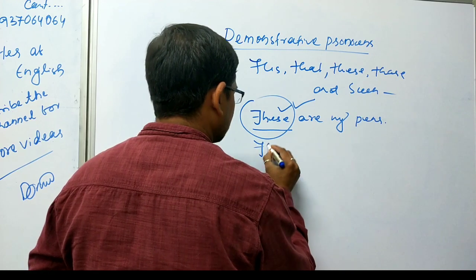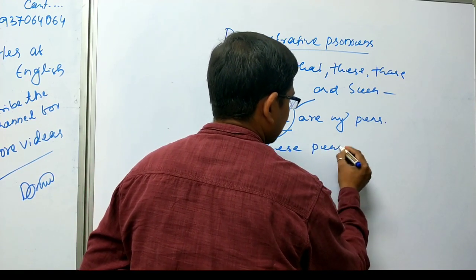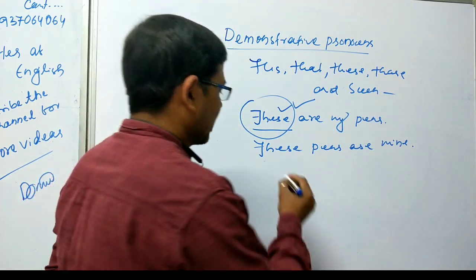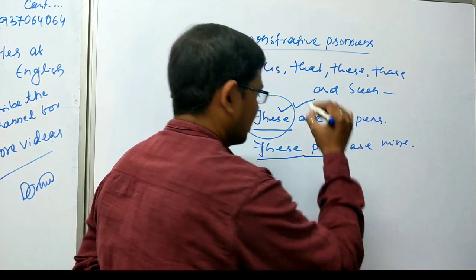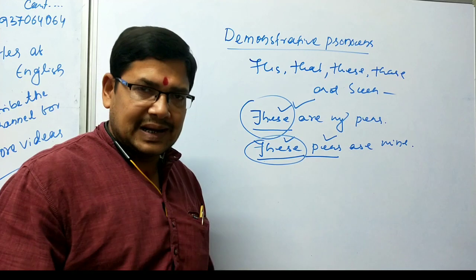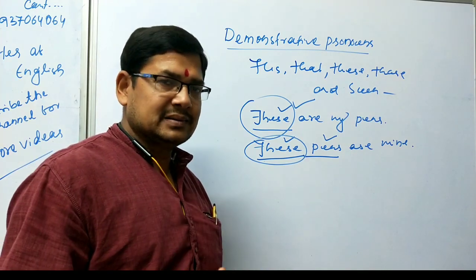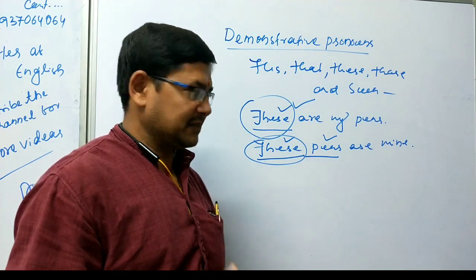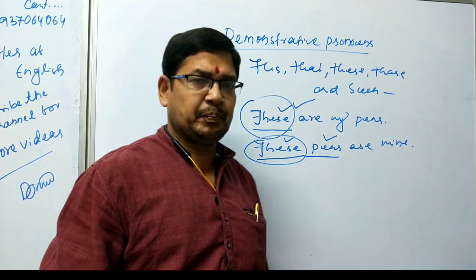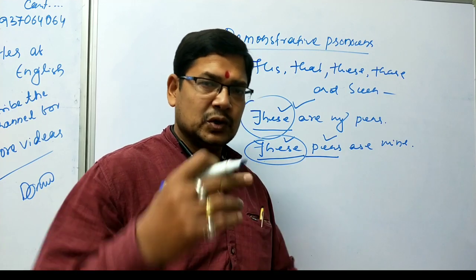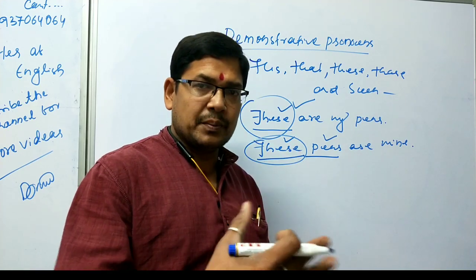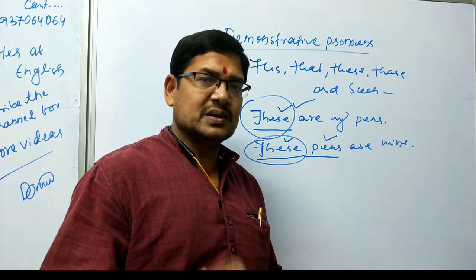But if I write: 'these pains are mine' — look at what happens here. I'm using 'these' in the noun phrase, and 'pains' is the noun. Before the noun, I'm using 'these.' That means 'these' is written to tell us more about the noun. As we know, any word that describes or tells us more about a noun is called an adjective. So, here, in this case, 'these' will be a demonstrative adjective. If 'this,' 'that,' 'these,' 'those,' and 'such' are used alone before a verb, they are your demonstrative pronoun. If they are used before a noun in a noun phrase, they are considered your demonstrative adjective.